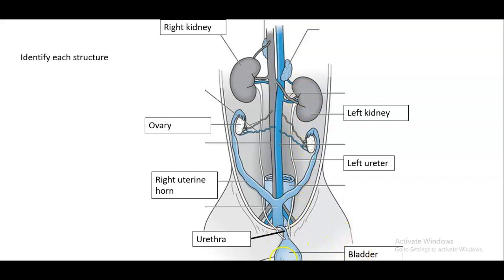And then we have the bladder itself. We have the urethra, which again is taking the urine from the bladder to the outside world. The right uterine horn, and then of course the ovary, the right ovary.